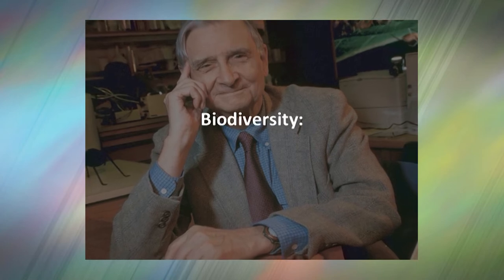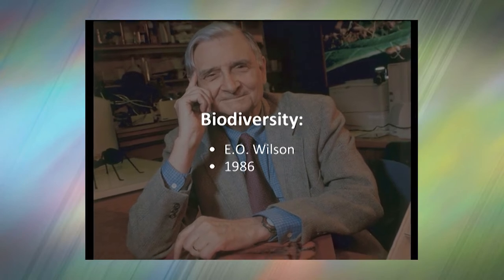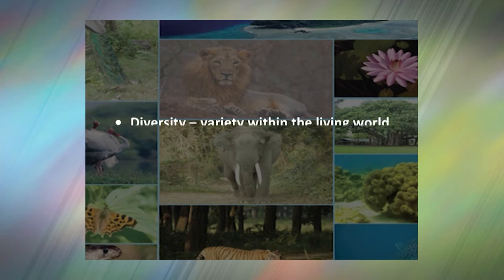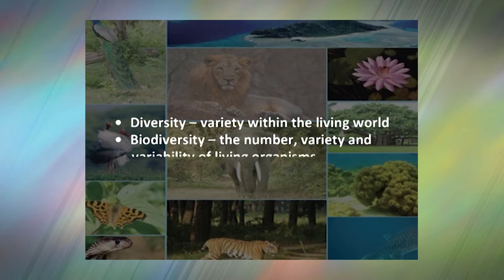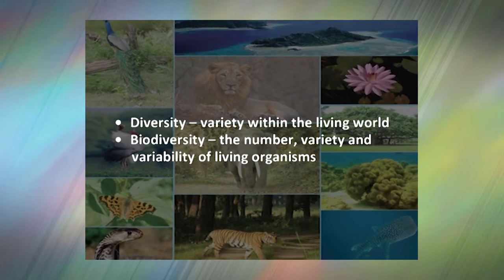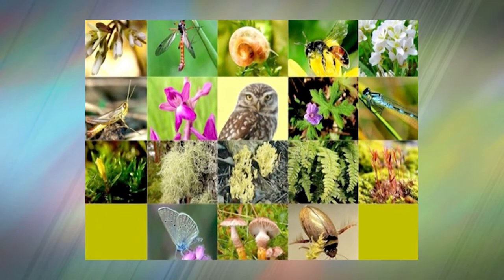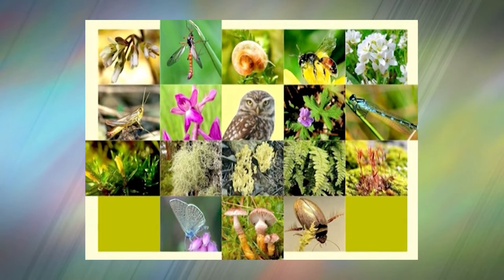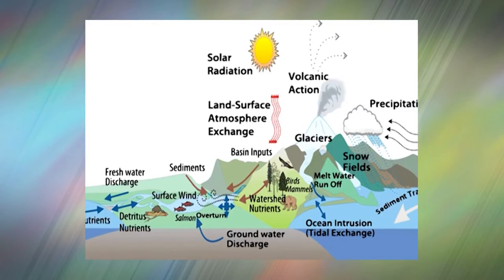To begin with, let me first explain what biodiversity is. The term biodiversity was first coined by entomologist E.O. Wilson in 1986. Diversity is a concept which refers to variety within the living world, and the term biodiversity is commonly used to describe the number, variety and variability of living organisms. Biodiversity may be defined as the totality of different organisms, the genes they contain and the ecosystems they form.